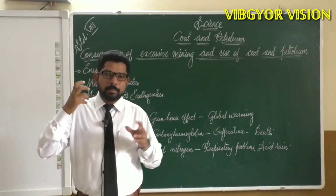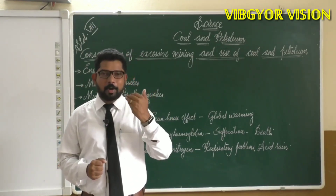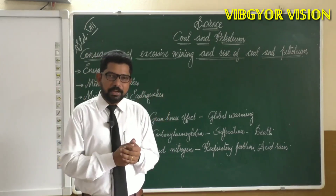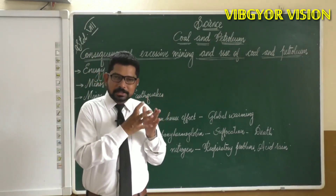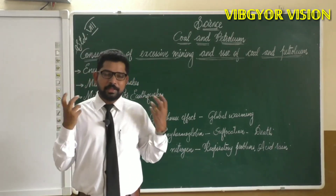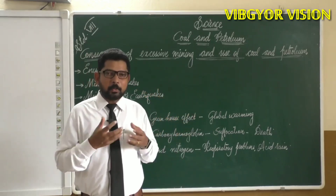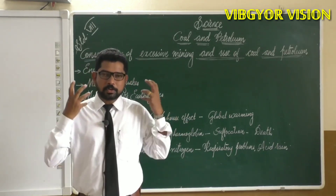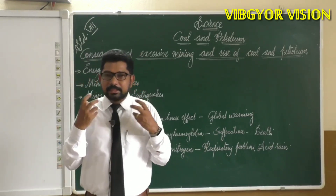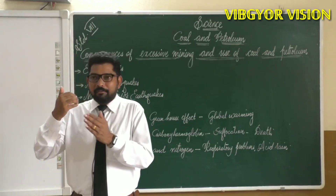Global warming means the average temperature of the earth increases, causing polar ice to melt. When Himalayan ice caps melt, it causes flooding of low-lying areas. The rivers fed by Himalayan glaciers flood, and most low-lying areas in India could be submerged. Increasing temperature also affects the monsoon.